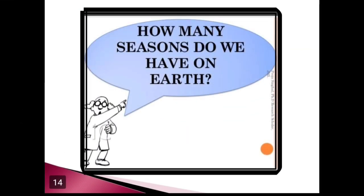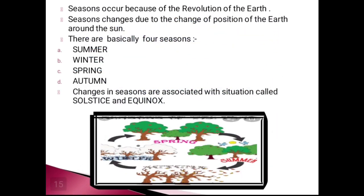Seasons play a very significant role in our life and they affect us. Have you ever thought how these seasons occur? Why do we have many seasons? There are basically 4 seasons: summer, winter, spring, and autumn. They occur due to the effect of revolution of the earth. The revolution of the earth together with the inclined axis causes these seasonal changes.